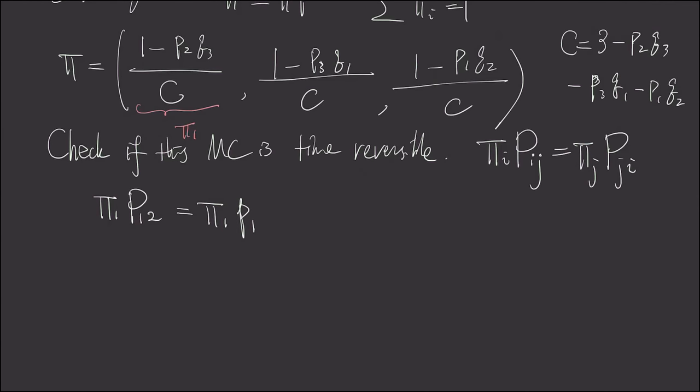And then let's check what is π2 times P21. This is the first one is a rate from the first vertex to the second vertex. And this one is the second vertex back to the first vertex. And if we write down this, this is nothing but π2 times Q2.